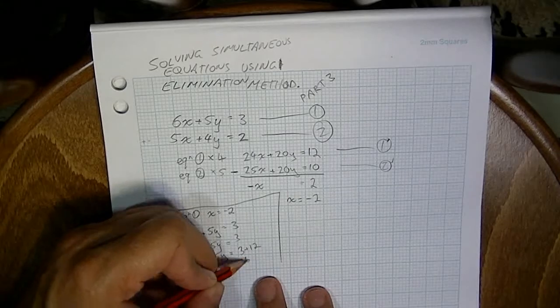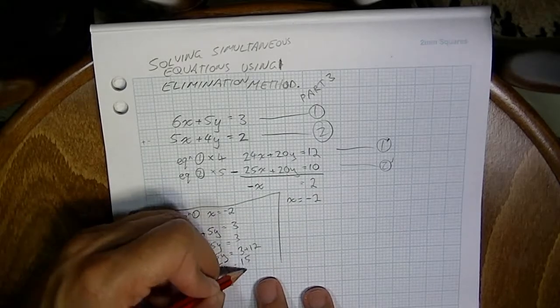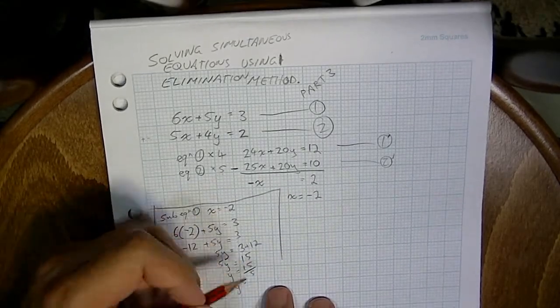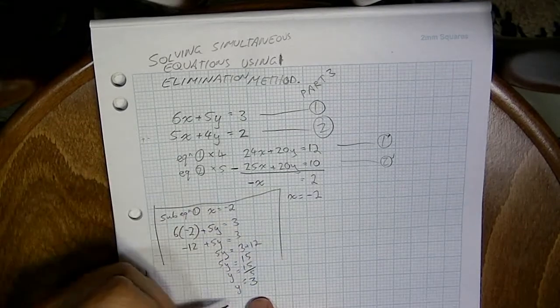5y is equal to 15, which means that y is equal to 15 over 5. Y is equal to 3.